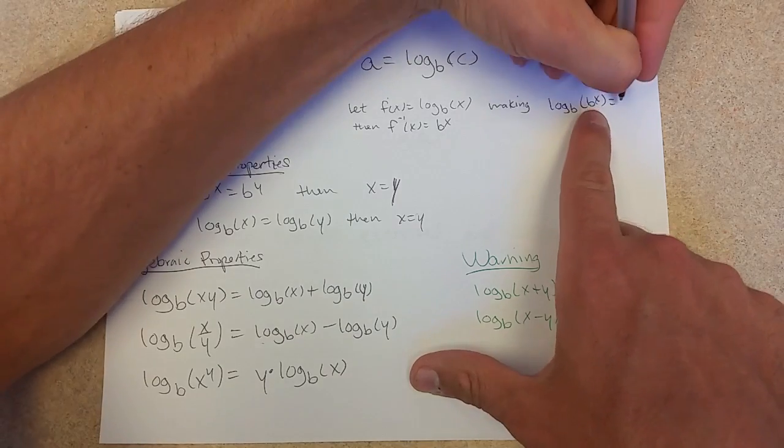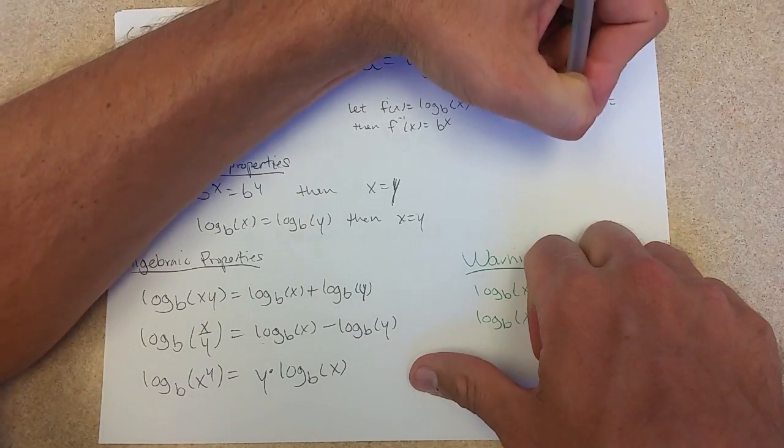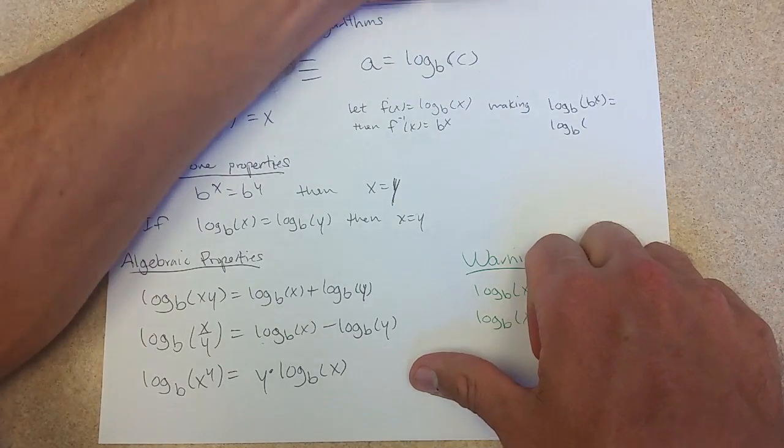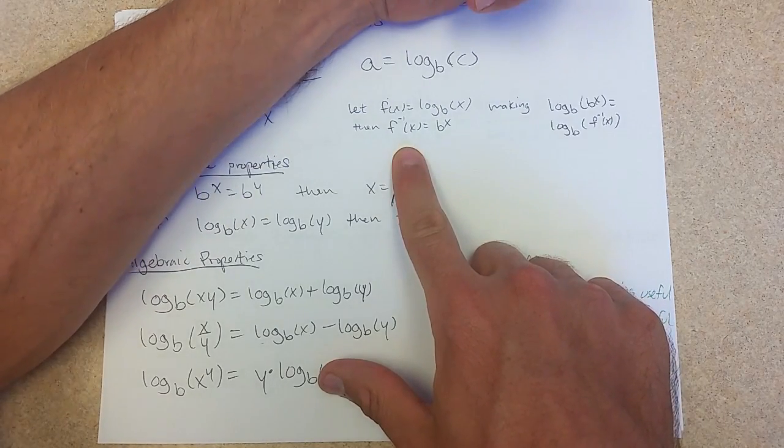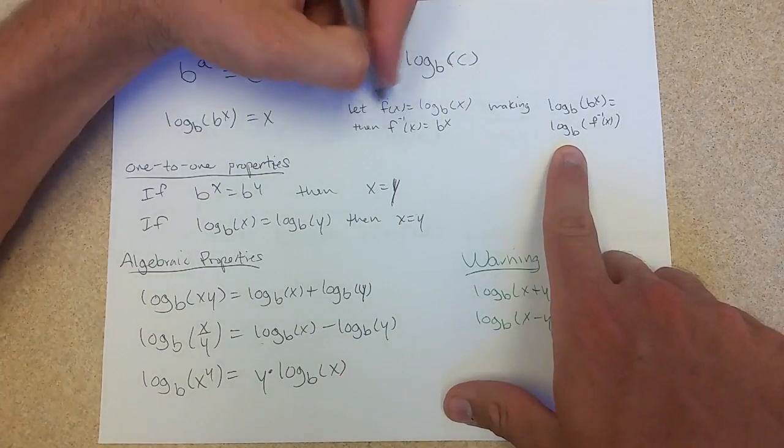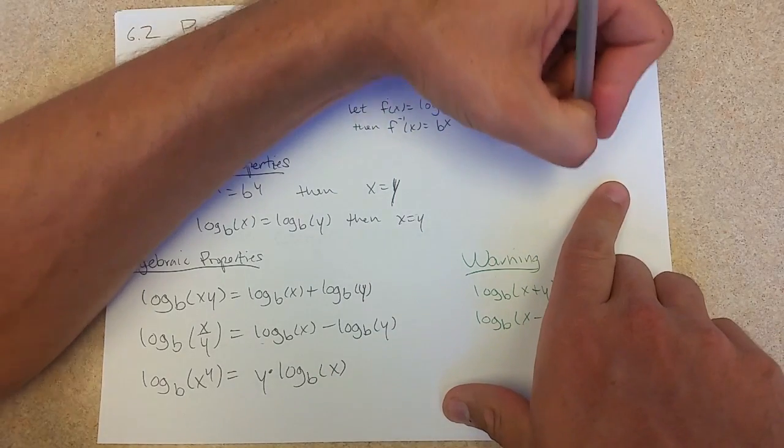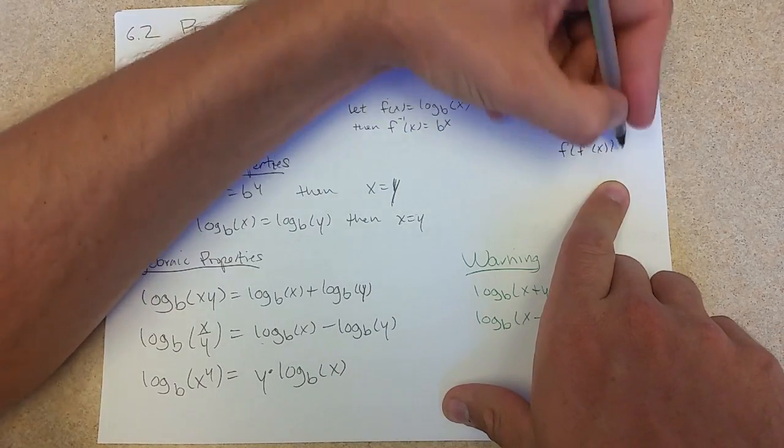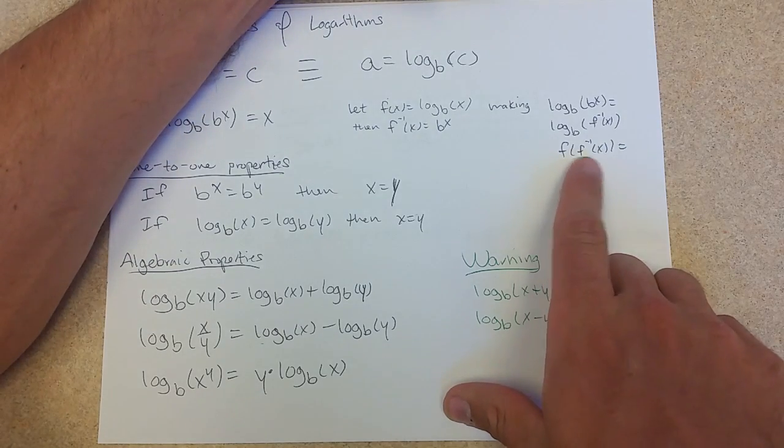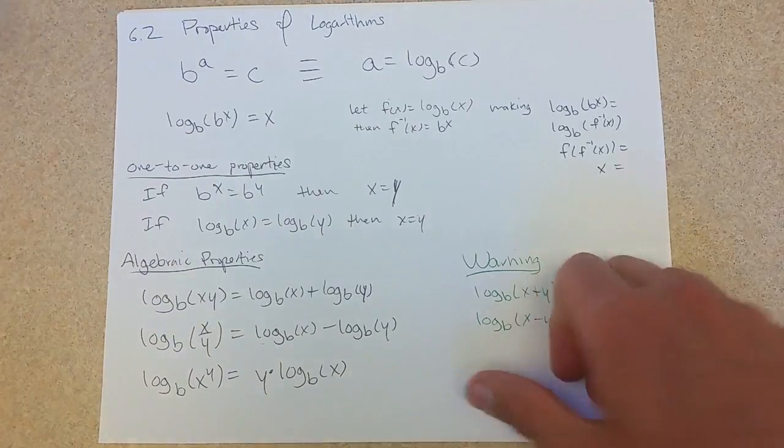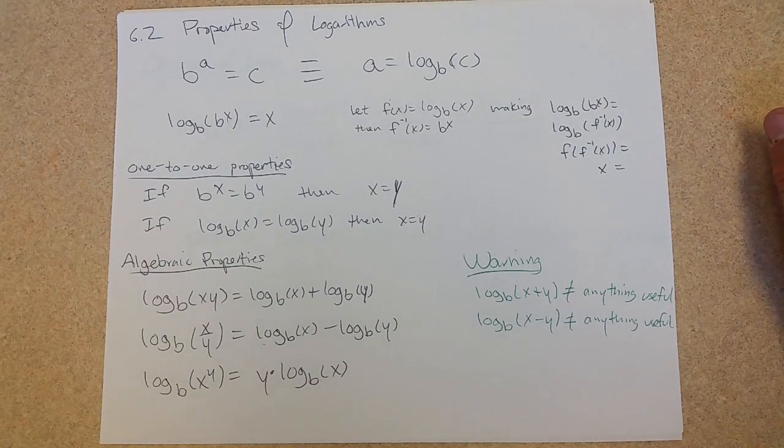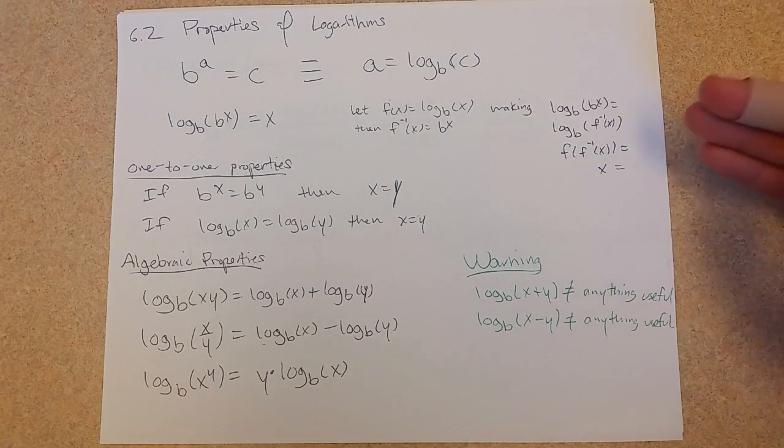We go inside, outside. It doesn't really matter the order we go. b to the x is f inverse of x. Log base b, that's the function f of x. And of course, what do you get when you compose f with the f inverse? You cancel out to get x.